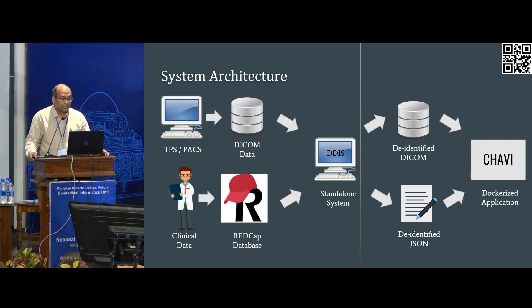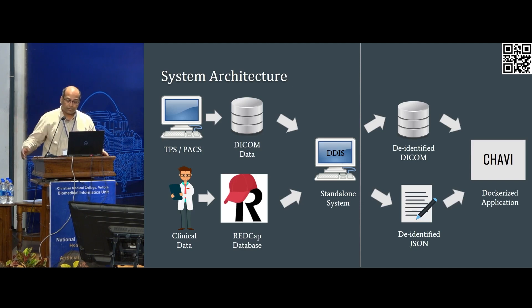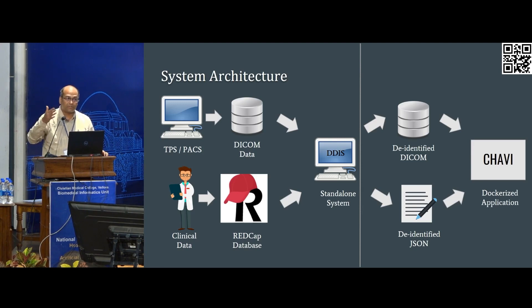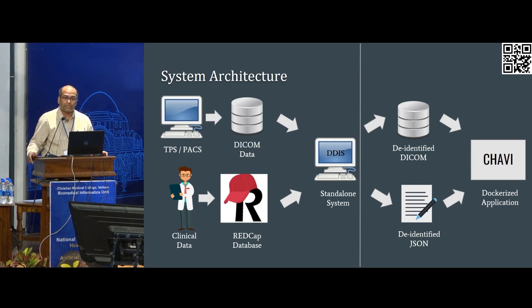This is our current system. We have treatment planning systems and PACS which provide us with DICOM data. Clinical data is passed through a REDCap database — these REDCap databases are not Chhavi-specific; they can be REDCap databases of other studies. There is a de-identification system which is a standalone desktop system that translates clinical data into de-identified data. This generates a pair of de-identified images and the corresponding clinical information, which is then translated into Chhavi — a dockerized application currently built using a MySQL database as a backend and a simple PHP-encoded application.